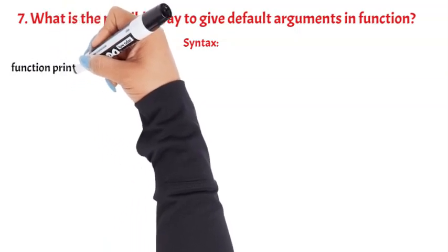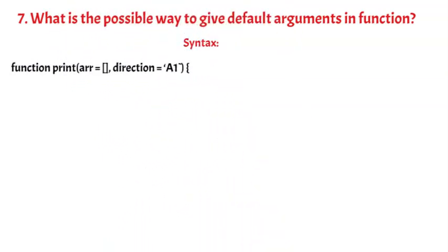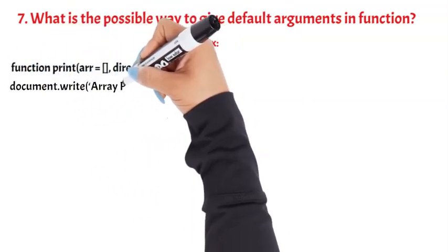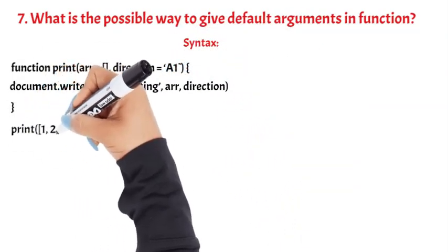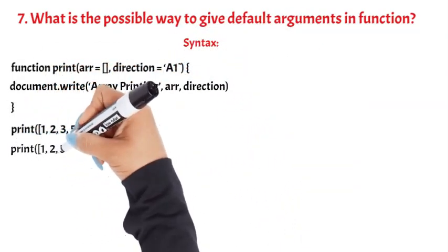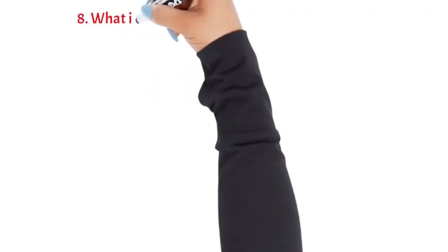Syntax: function print(r, direction = 'a1') { document.write(r + direction); } print(1, 2, 3, 5); print(1, 2, 3, 'a2'); Question 8.